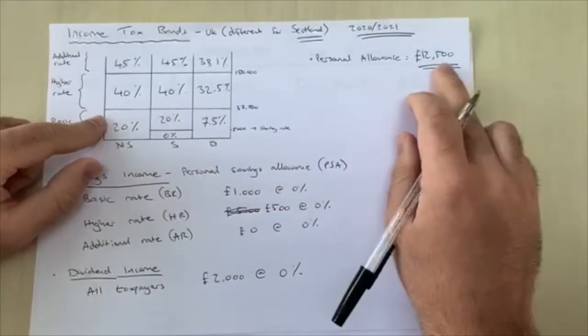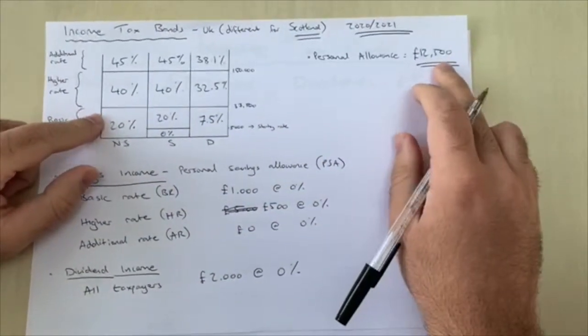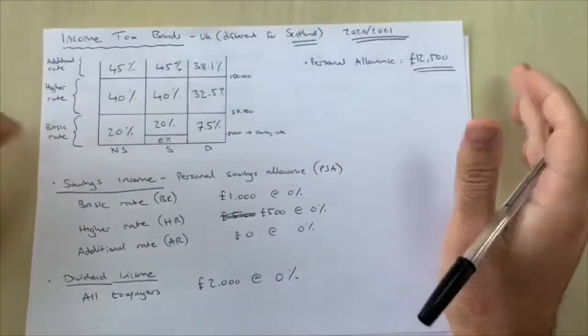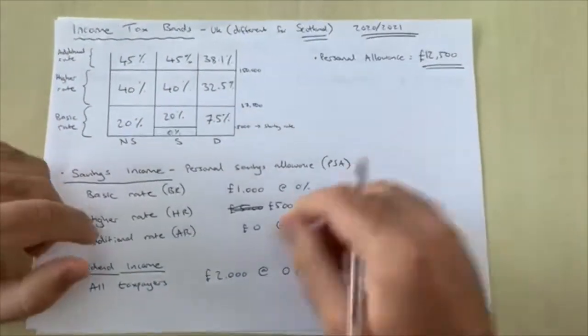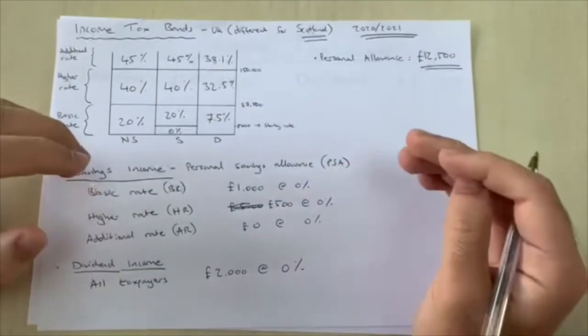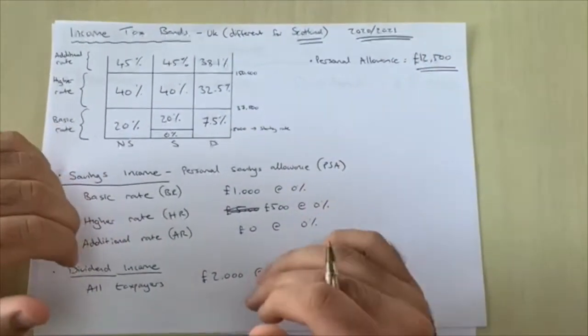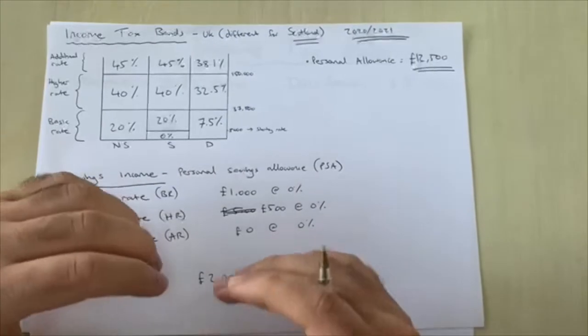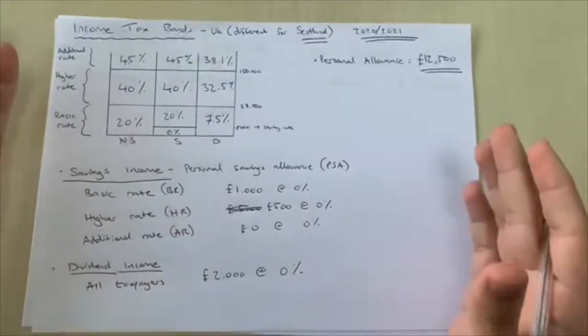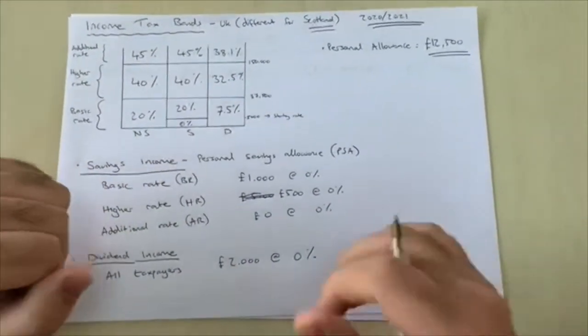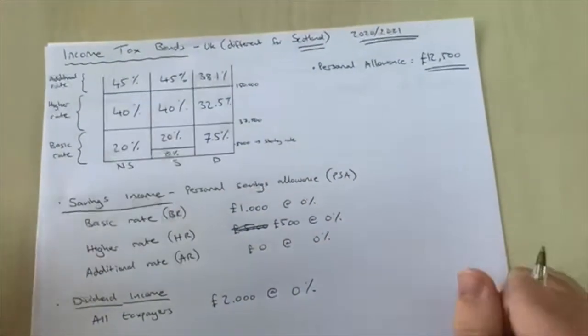The personal allowance is £12,500 and that's available to everyone. The only caveat is if you're earning over £100,000, your personal allowance will be reduced, and if you earn over £125,000 you do not have a personal allowance.